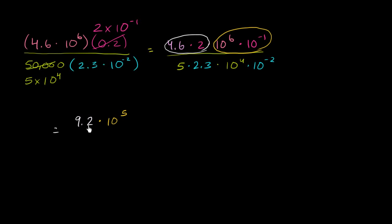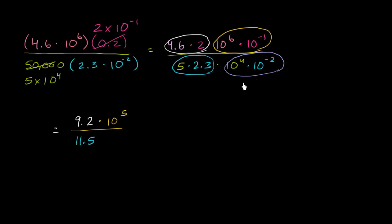In the denominator, 5 times 2.3: 5 times 2 is 10, 5 times 0.3 is 1.5, so it's 11.5. Then 10 to the fourth times 10 to the negative 2 gives 10 to the 4 minus 2, or 10 squared. So the denominator is 11.5 times 10 to the second power.